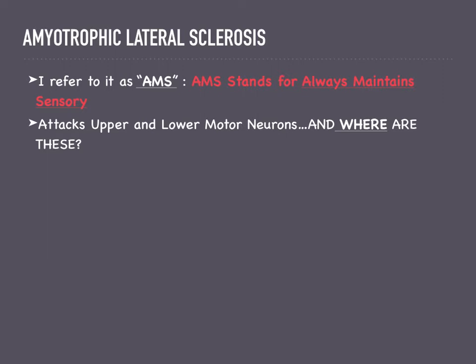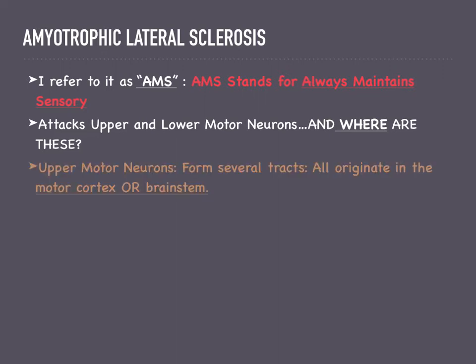Both upper and lower motor neurons are present in the brain and the spinal cord. Upper motor neurons form several tracts that originate in the brain — either in the motor cortex or the brain stem.